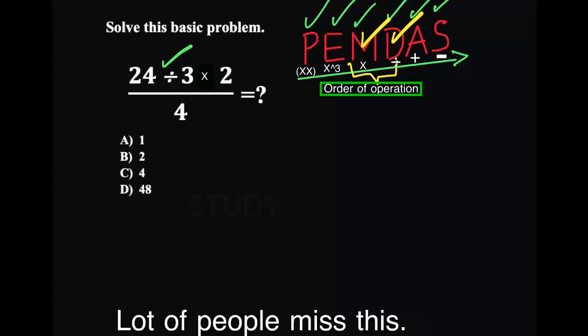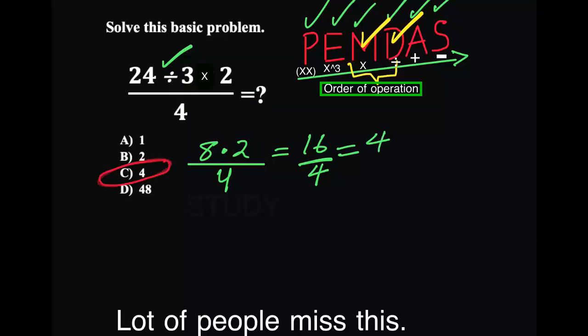So 24 divided by 3 is 8, times 2 divided by 4. 2 times 8 is 16 divided by 4. That gives us 4. And the answer is right here. Thank you so much.